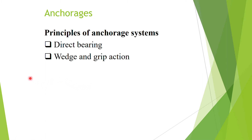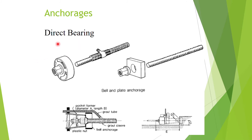When we tension the steel, we need anchorages to transfer the pre-stressing force at both ends of the structure. Anchorages make use of two principles: one is by direct bearing, and the other is by wedge and grip action.